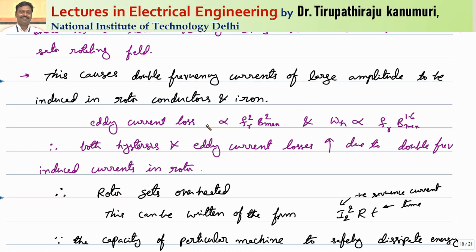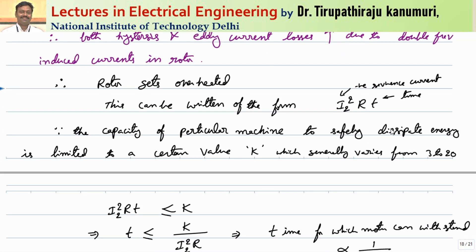Eddy current losses are proportional to frequency squared times Bmax squared. Here the frequency corresponds to the negative sequence components, which are at double frequency, so eddy current losses will be doubled. Similarly, hysteresis losses depend on the frequency of magnetic reversals. For negative sequence components, the rotor frequency Fr equals two times the supply frequency, so hysteresis losses also increase significantly, as do copper losses in the conductors.